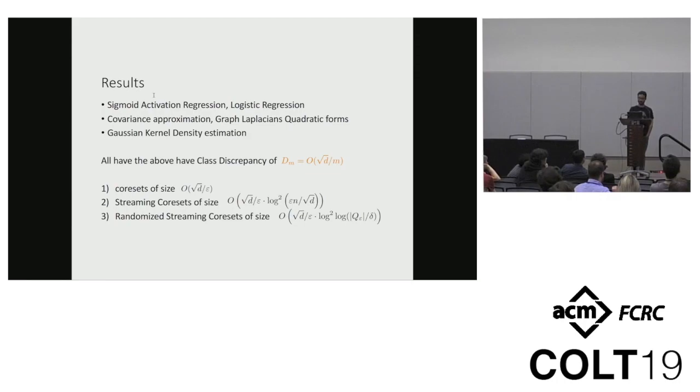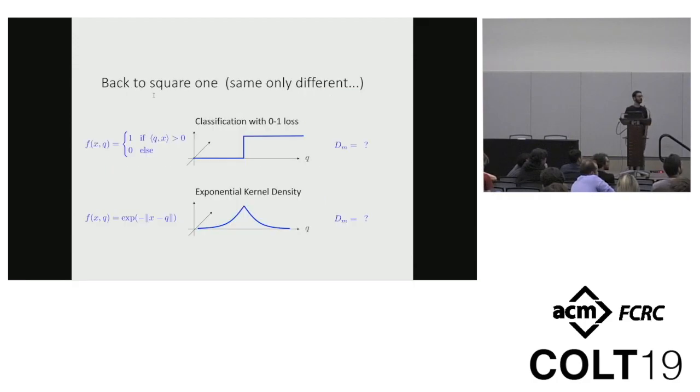And this is my one minute. So what you get is basically, for a bunch of problems, including logistic regression, sigmoid activation regression, covariance estimation, graph approximation, Gaussian and other kernel approximations, and so on, you get that all of them have core sets of size square root D over epsilon, and have streaming algorithms for creating those core sets. Specifically for kernel density, we actually close an open problem that's been worked on for about 10 years now, or maybe more. And while I think this is an incredibly surprising result to me, there's still a lot of work to be done.